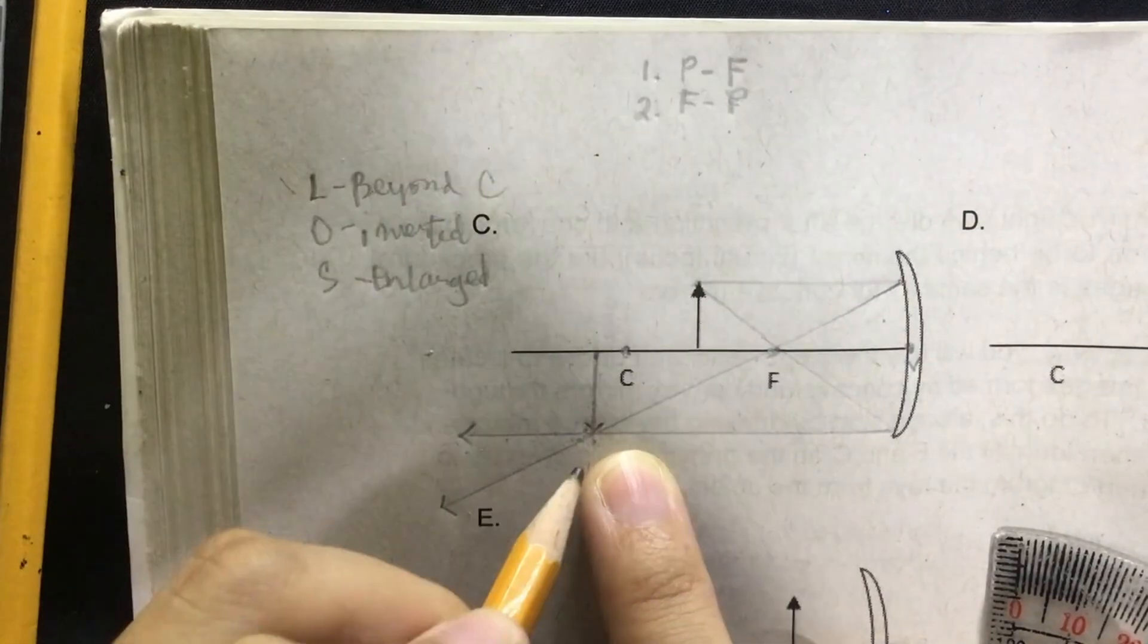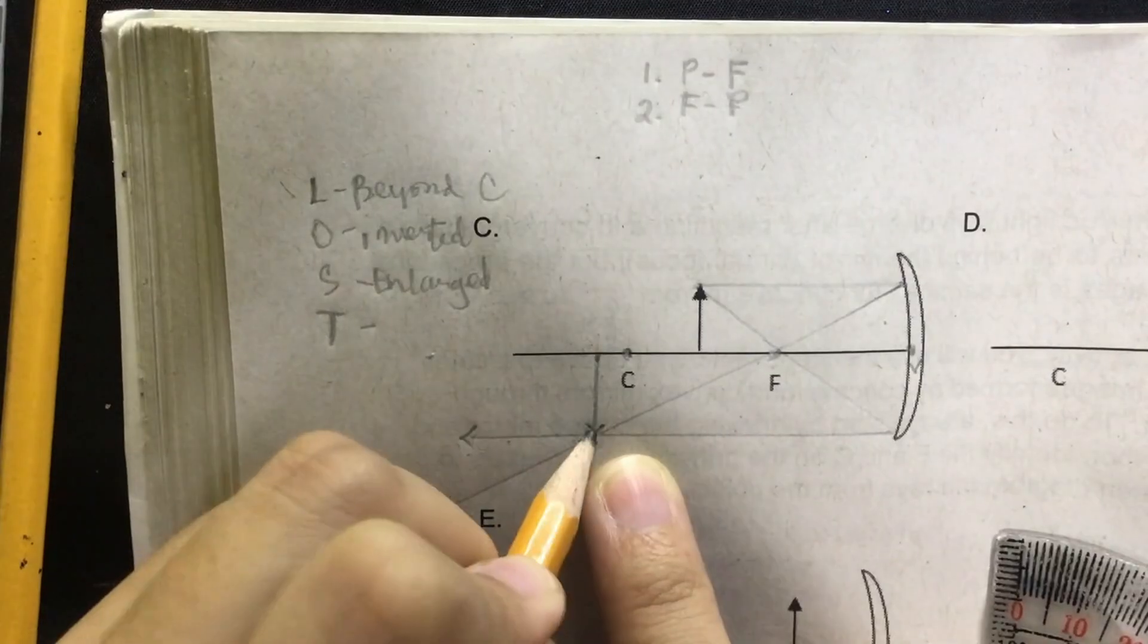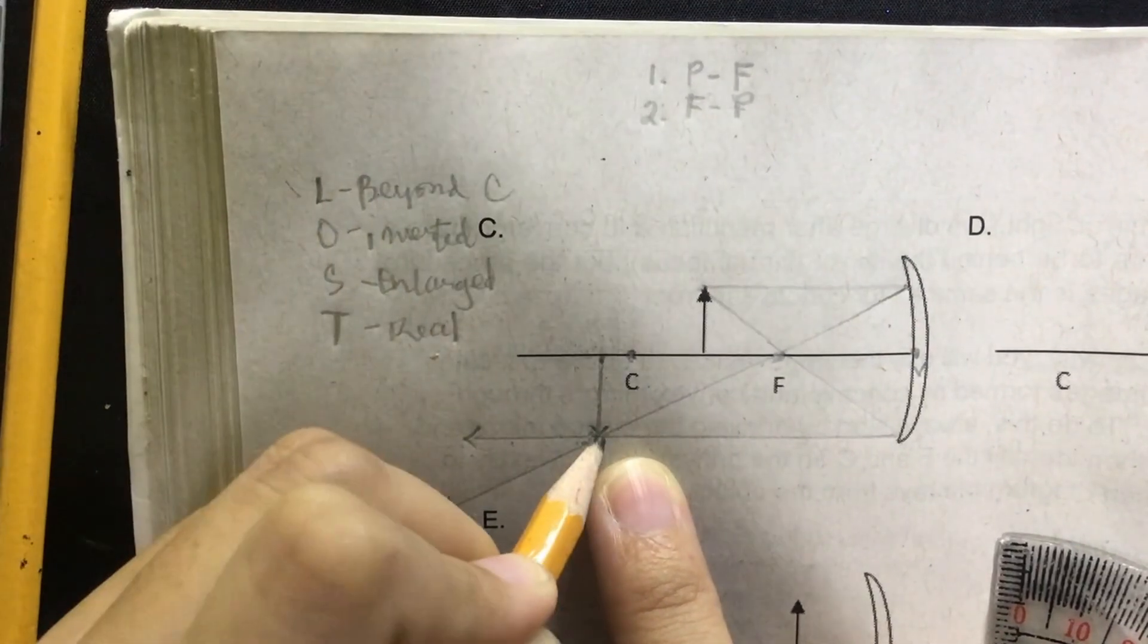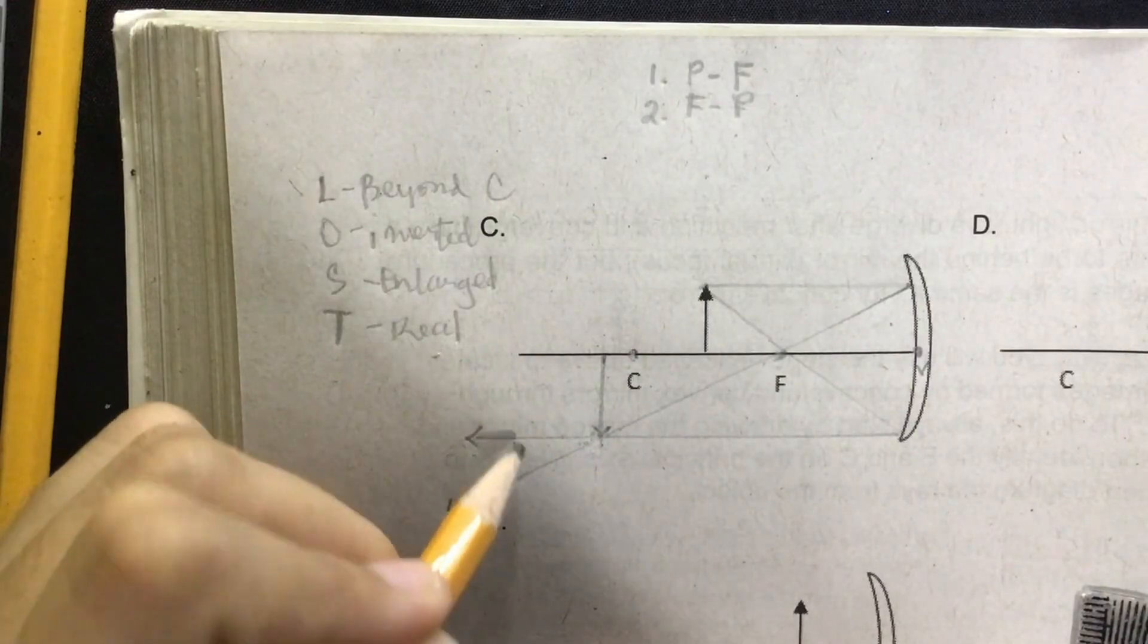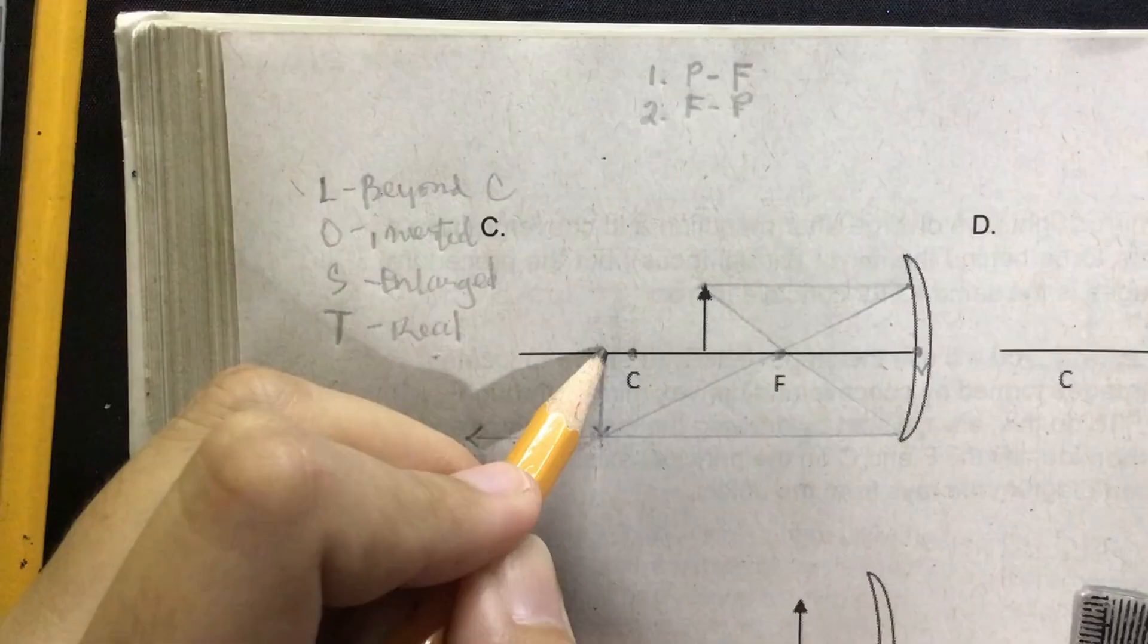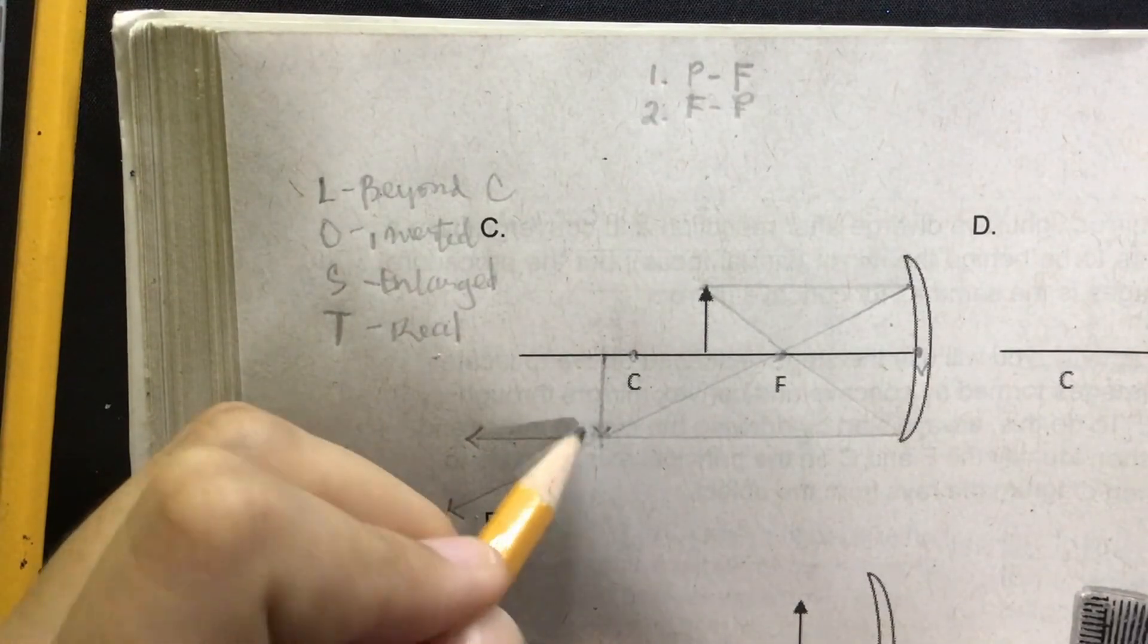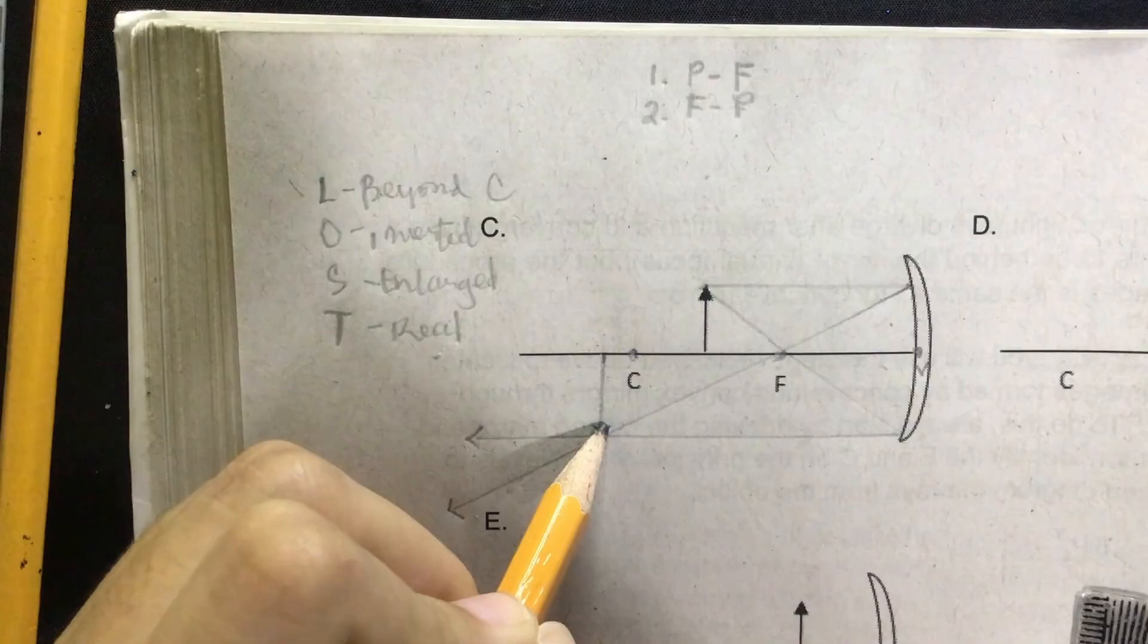While the type of image formed is a real image because it is formed using real rays, so these are real rays coming from the source of light. Okay, so this is a real image since it is also formed in front of the mirror. So that's it.